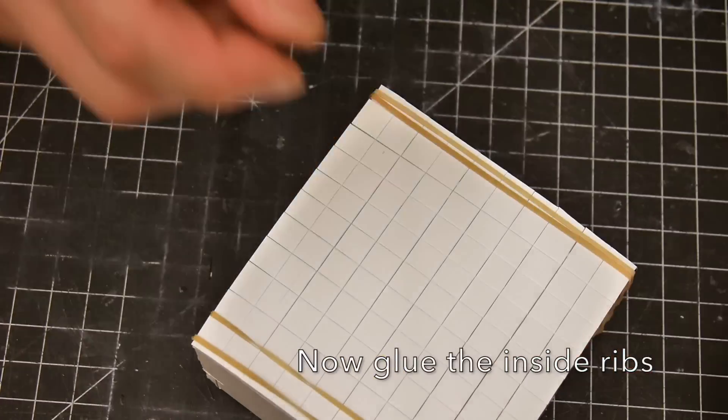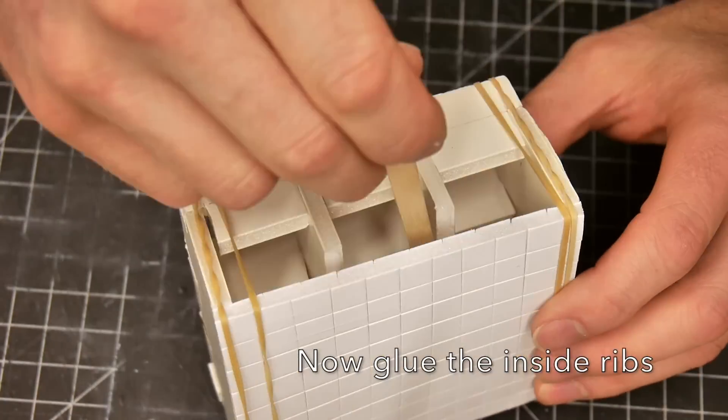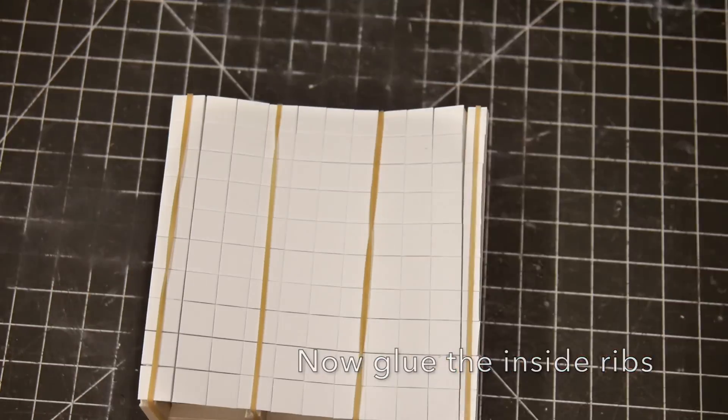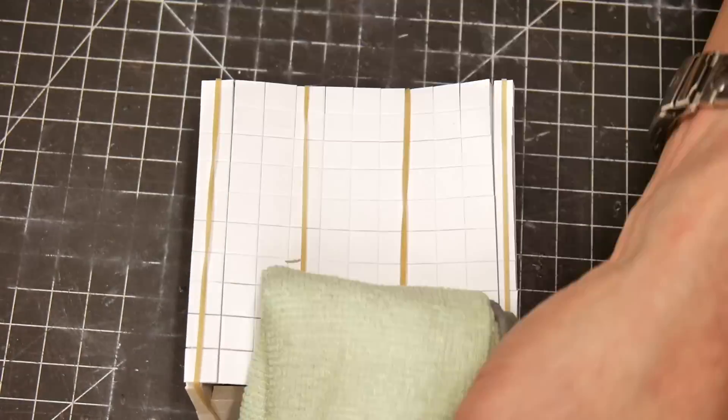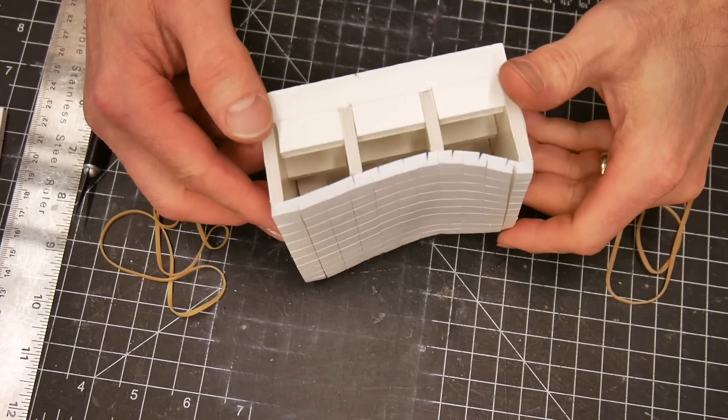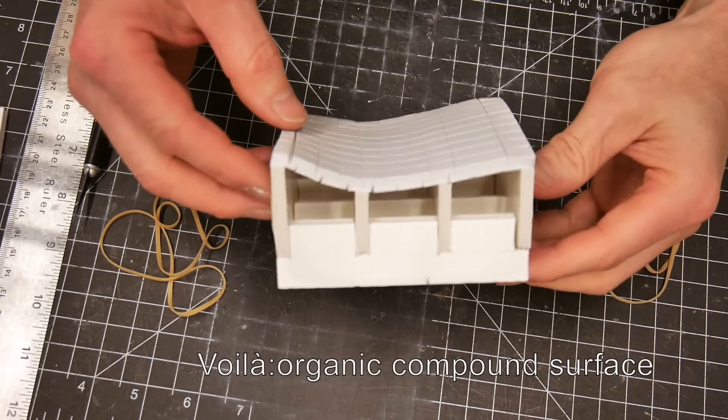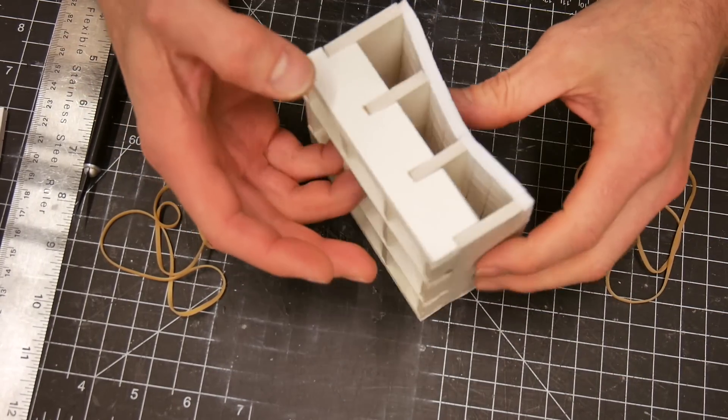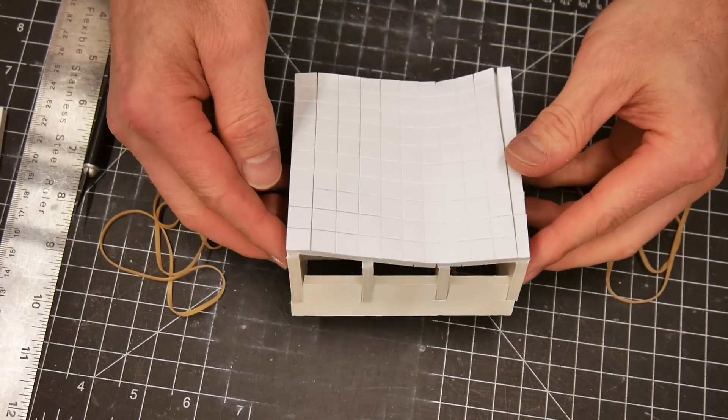To lay on this structure we're gonna glue on the ends first because I want the edges to be nice and straight and then we're gonna do the inside ribs. I know it's a little bit backwards. We're gonna hold everything in place with rubber bands and this is what you're gonna get in the end. A beautiful organic compound surface with foam core. And we didn't even use any hot glue.